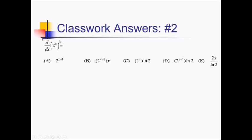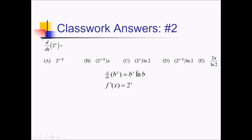On this problem we have the derivative of 2 to the x. This is one of those rare problems where they give us something that's not e as a base, so we have to use the more general rule: the derivative of b to the x is b to the x times the ln of b. With this one we've got 2 to the x times the ln of 2, and that's going to match answer choice C.